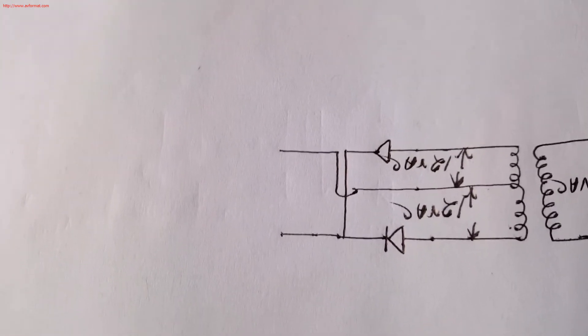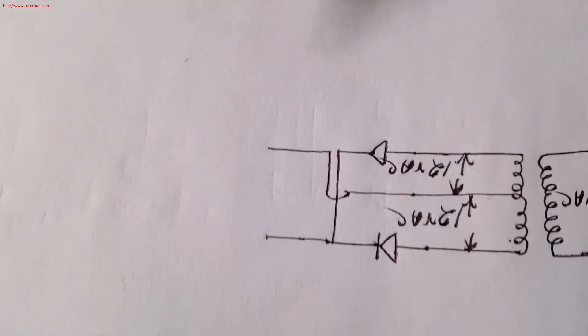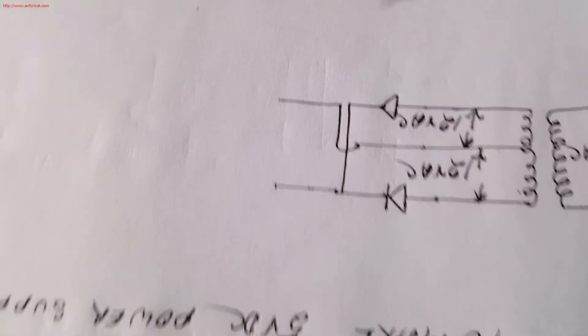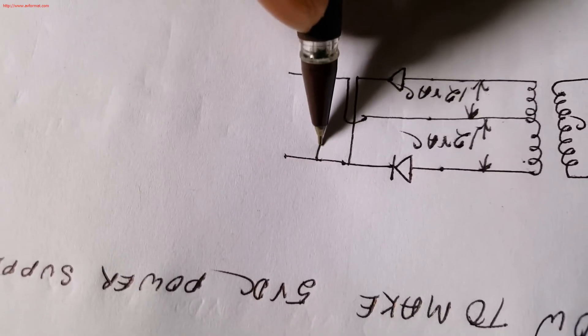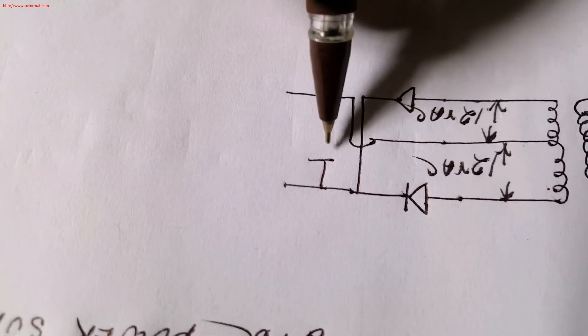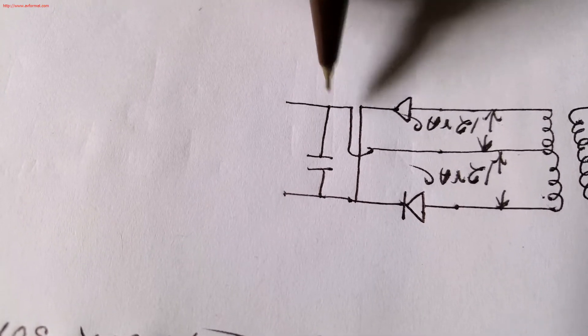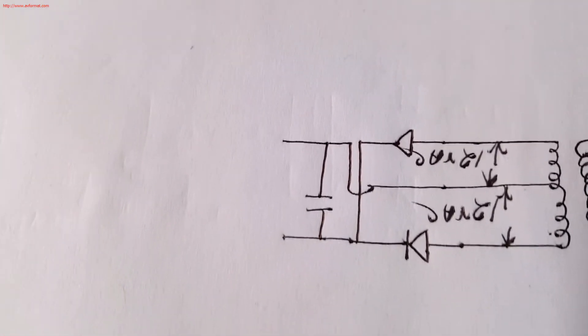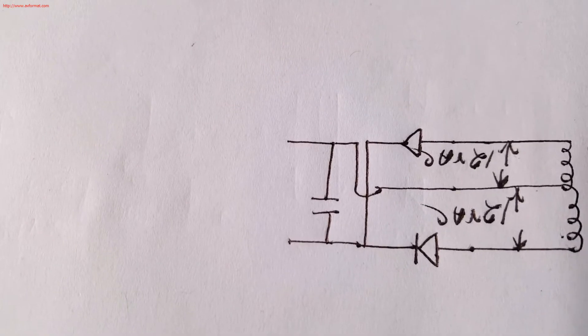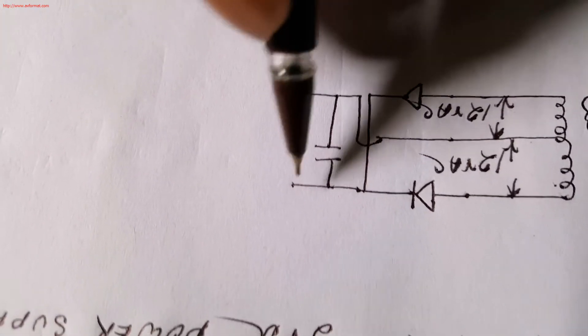So we need to make it pure DC. We want to use a capacitor here. It will block AC component and it will give DC.